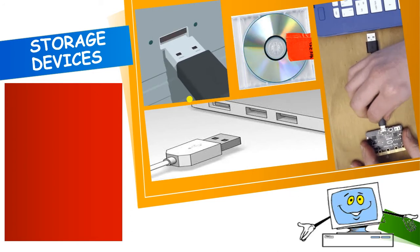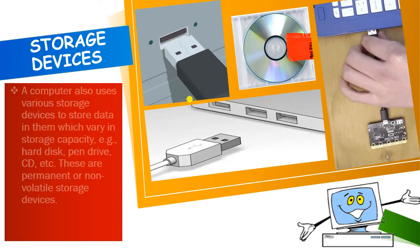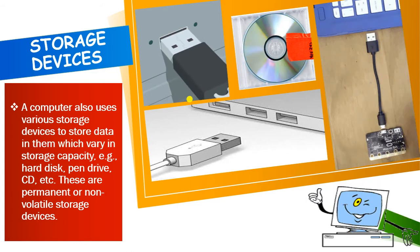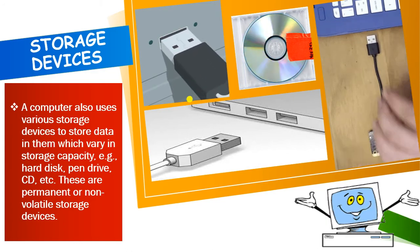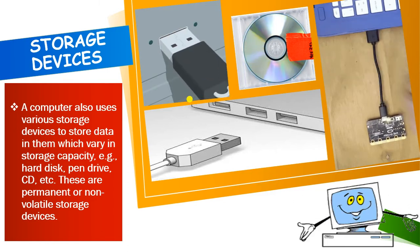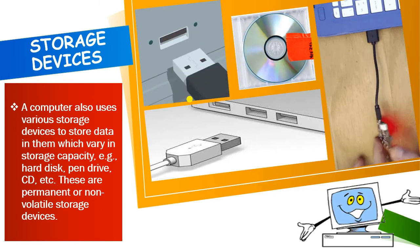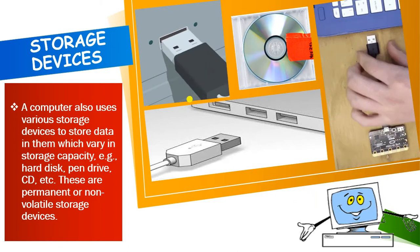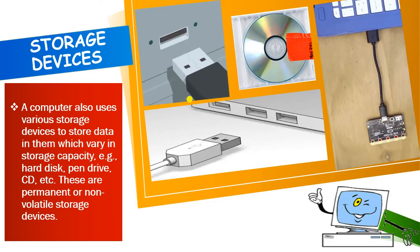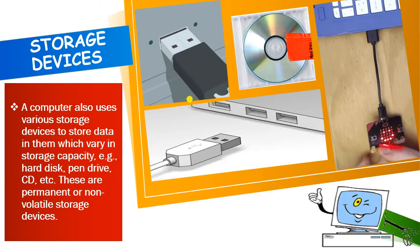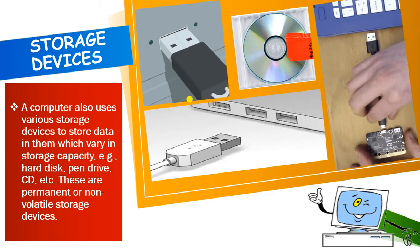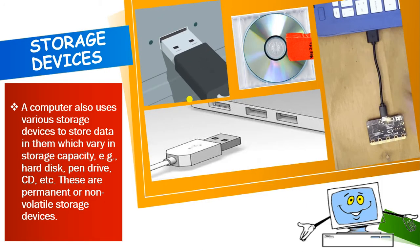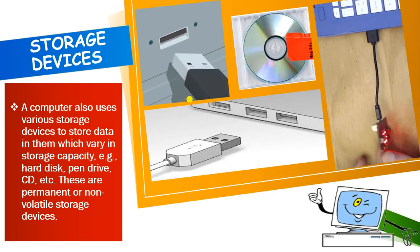First, what are storage devices? A computer uses various storage devices to store data — for example, hard disk, pen drive, CD. These are permanent or non-volatile storage devices. Non-volatile means the data will not be lost when you shut down your computer. When you turn off your computer, the data will not be lost — it will remain there forever.